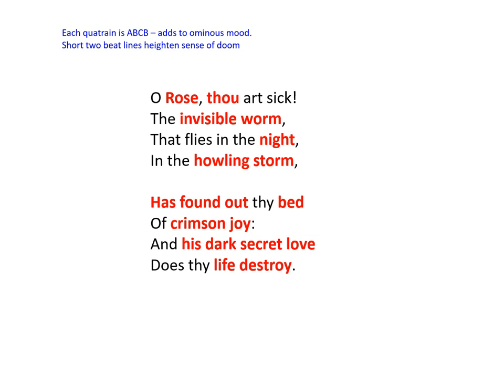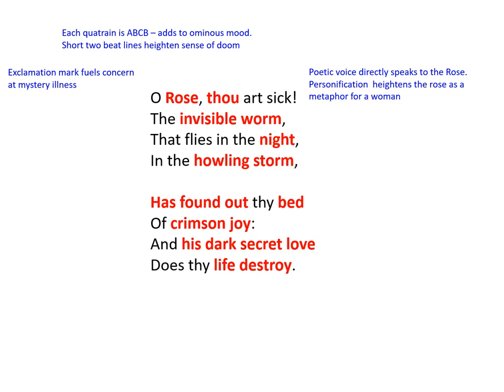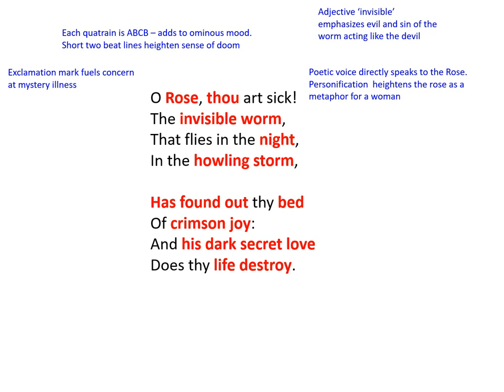The personification of the rose heightens that this flower is a metaphor for a woman. The exclamation mark at the end of that first line fuels the concern of the poetic voice at this mystery illness. And then by line two, we're told that the invisible worm — with emphasis on 'invisible' — that adjective emphasising the evil and sin of this worm acting like the devil in hidden and unseen spaces.